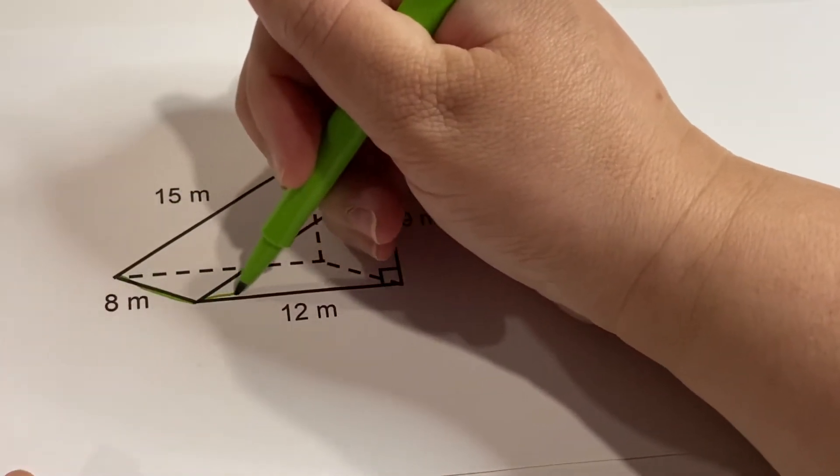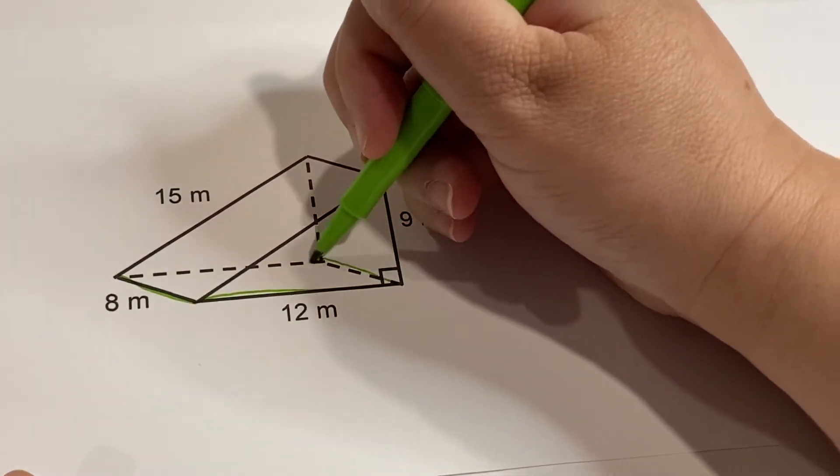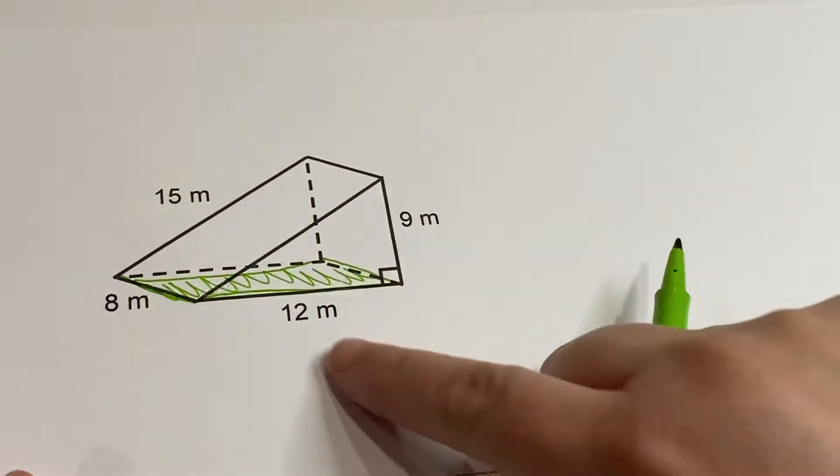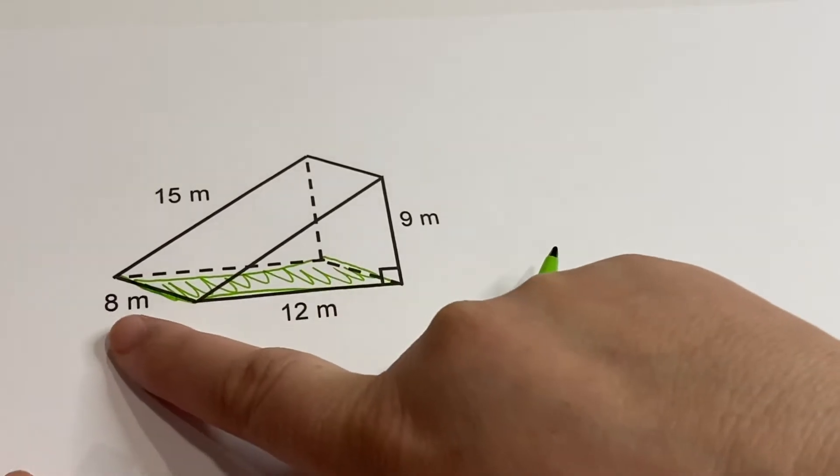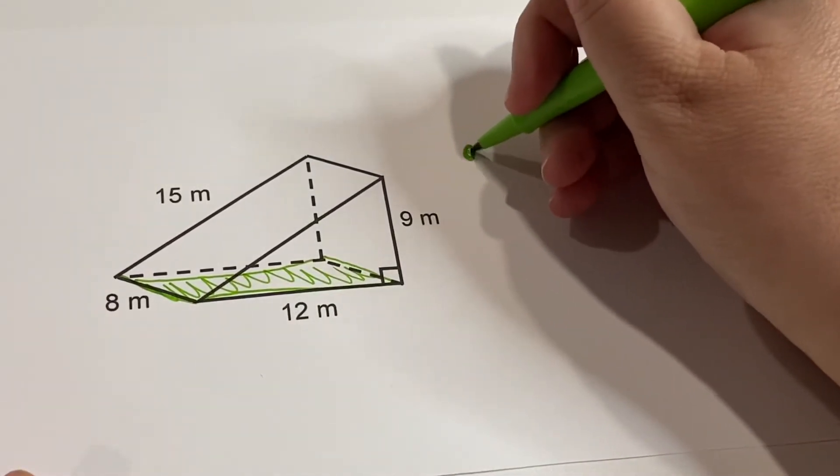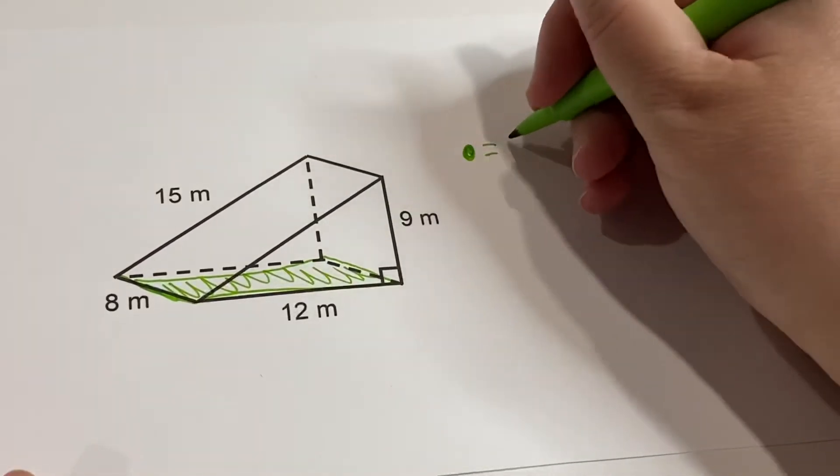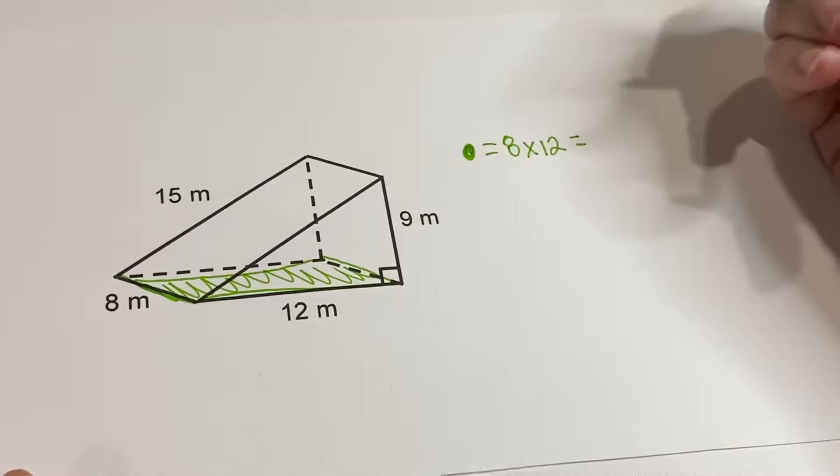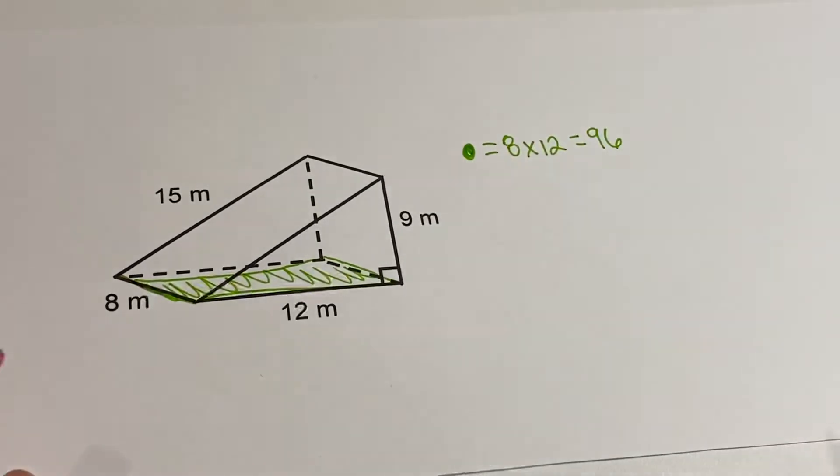We have this bottom rectangle here. I'm just going to do this in green and kind of shade it in. You can see here that it is going to be an 8 by 12. So our green one is going to equal 8 times 12, and 8 times 12 is equal to 96. So we have one of our five faces done.